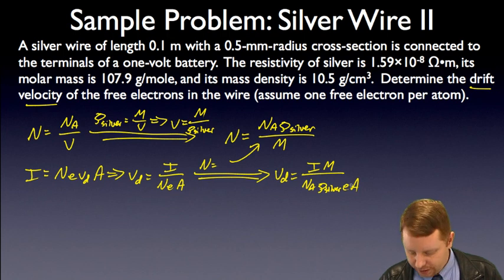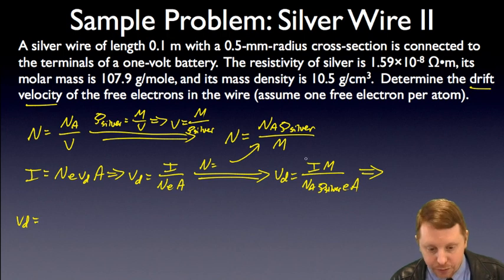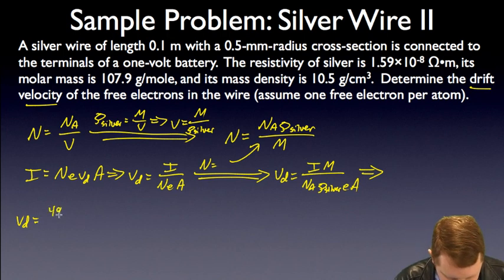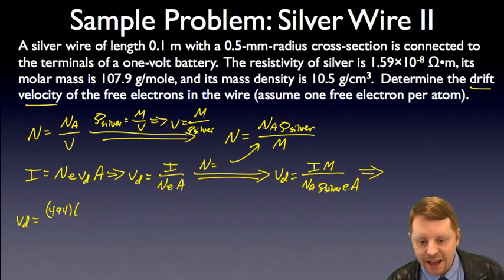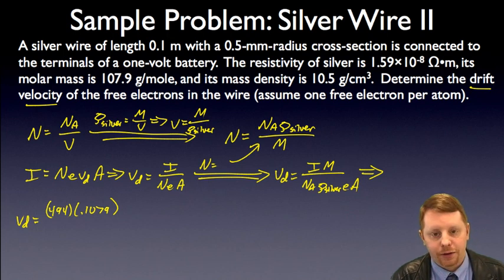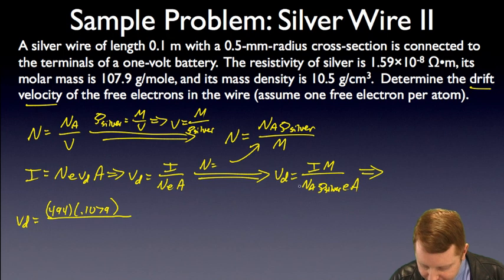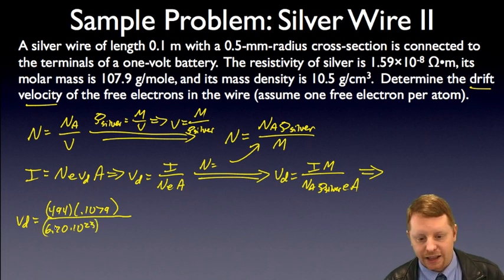All right, at this point we can substitute in our values, which implies then that the drift velocity is going to be equal to, while our current is 494 amps, molar mass is 0.1079 kilograms per mole, because we have 107.9 grams per mole, we'll convert it to SI units, kilograms, divided by Avogadro's number, 6.02 times 10 to the 23rd atoms per mole.